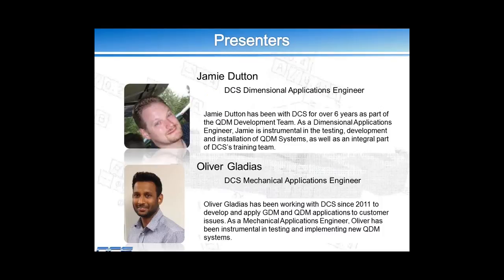Two presenters today are Jamie Dutton and Oliver Gladius, both part of our QDM implementation, validation, and design team. Jamie Dutton is a DCS dimensional applications engineer — if you've called in for support on our QDM or GDM side, you've probably spoken to Jamie or Oliver. Oliver does a lot of our initial implementations and installations and works with person training on how to use and work with the system. They do a lot of work helping automate quality processes, which is really what we want to focus on today. I'll now pass the presentation over to Jamie Dutton.